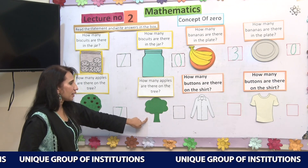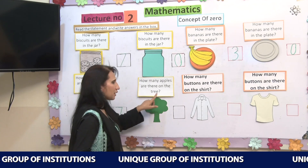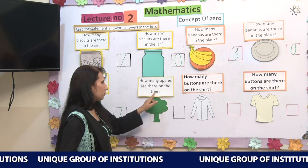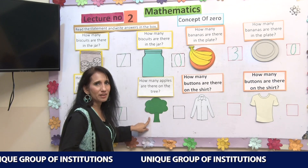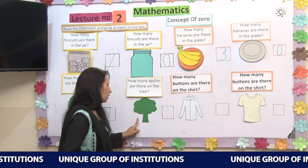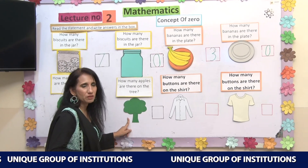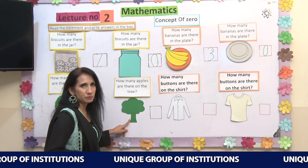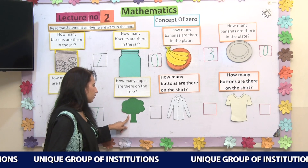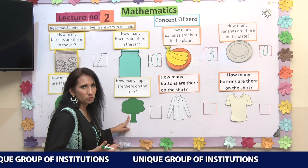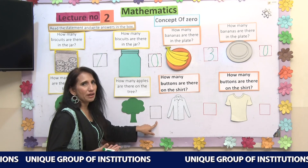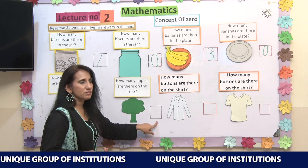Here is another tree, and the caption is the same: how many apples are there on the tree? I am unable to see any apple — the tree is empty. So there are 0 apples on this tree. I will write 0 in this box.